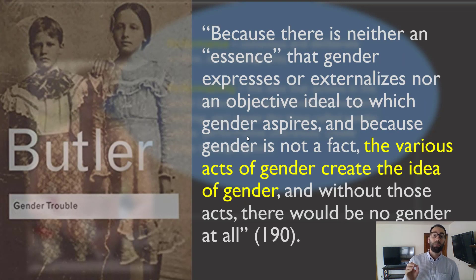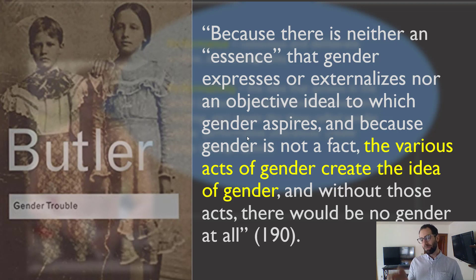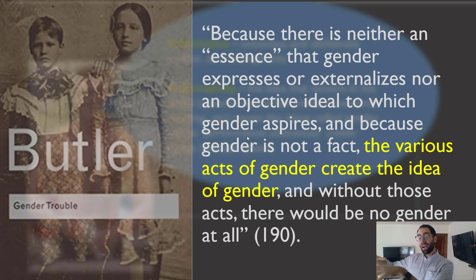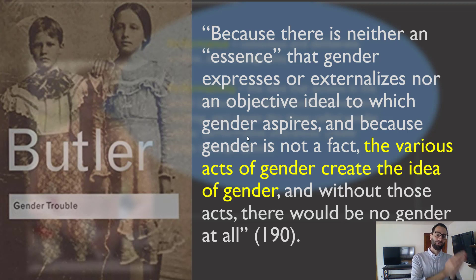Another sentence in the same chapter: 'Because there is neither an essence that gender expresses or externalizes, nor an objective ideal to which gender aspires, and because gender is not a fact, the various acts of gender create the idea of gender. And without those acts, there would be no gender at all.' So once again, what makes gender performative? Not that it is a performance as if on a stage play, but that what makes gender is actions in the world — and the conventions in society that tie those kinds of actions to particular genders that normative culture agrees upon, like being a man or being a woman. I hope that has clarified an important but fairly difficult and complex distinction between performance and performativity. I'll see you next time for more common misconceptions in Judith Butler. Thanks. Bye.